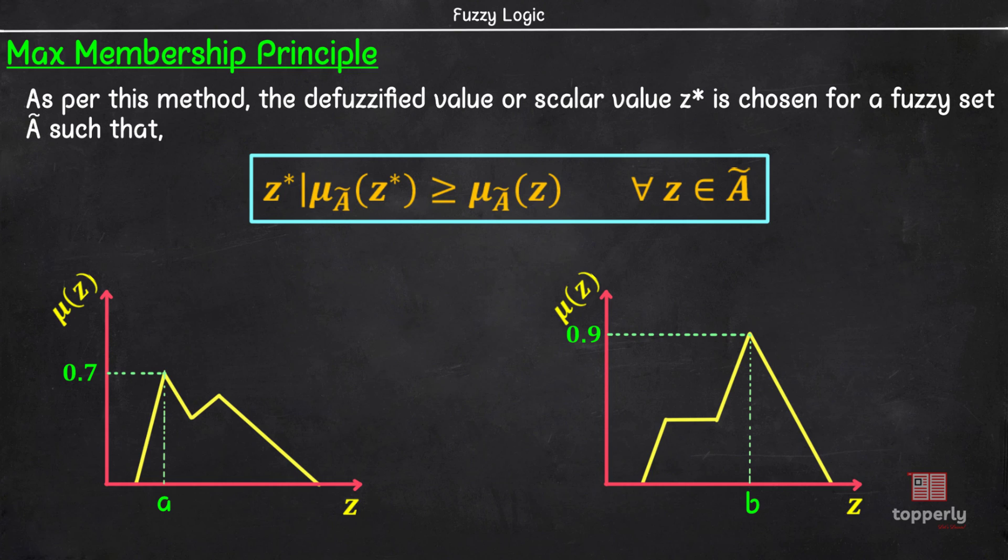To take two examples, consider these two graphs. In this case, z* is equal to a because it has the highest membership value. Similarly, here, z* is equal to b because it has the highest membership value. So you can see that this is a fairly simple method to find the defuzzified value. You simply have to find the value of z for which the membership value is highest.